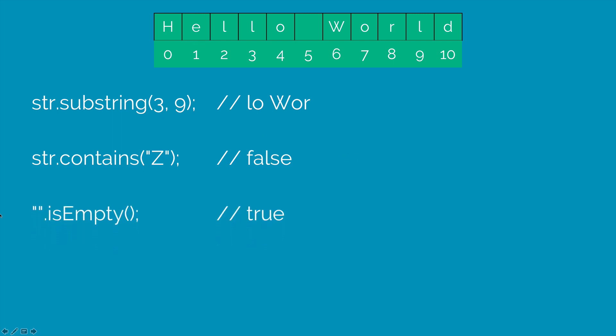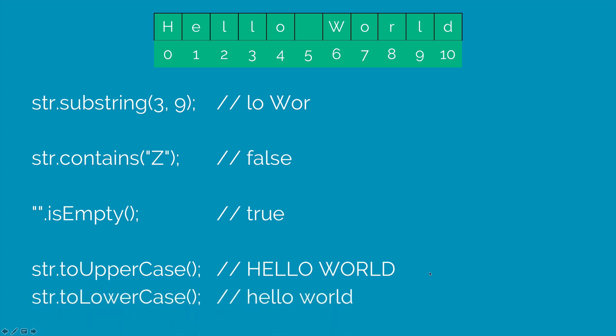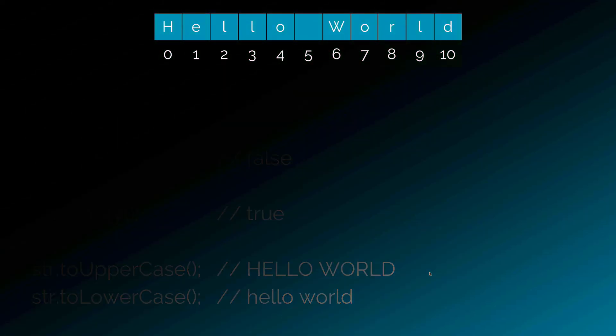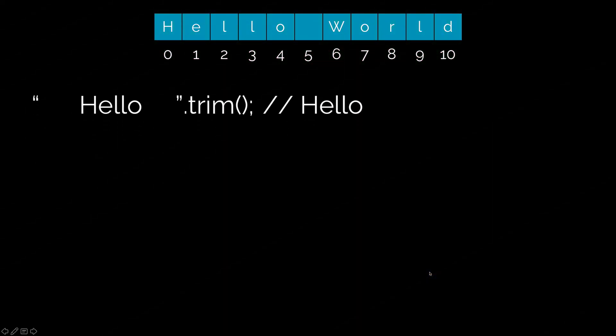Now isEmpty, as the name suggests, tells you if the string is empty or not. So this empty string here which is represented by these double quotes would return true if you call isEmpty on it. Now there's toUpperCase that will convert the text and return a new string which is the complete uppercase version of the text. Similarly, we have toLowerCase as well.